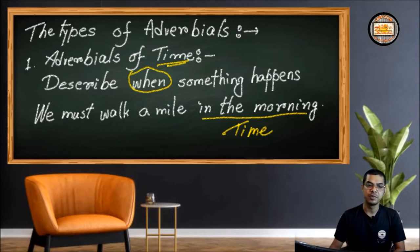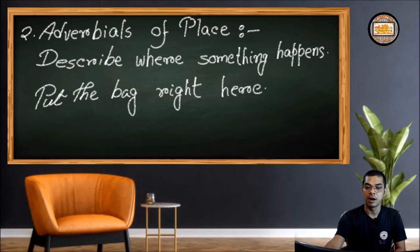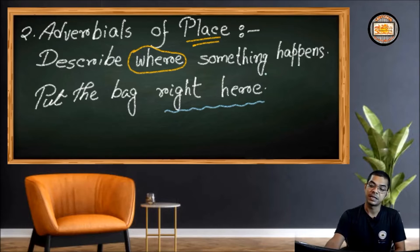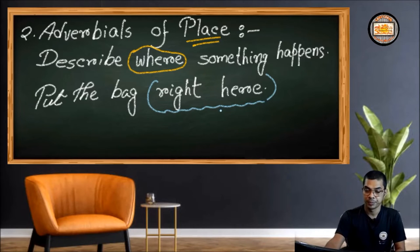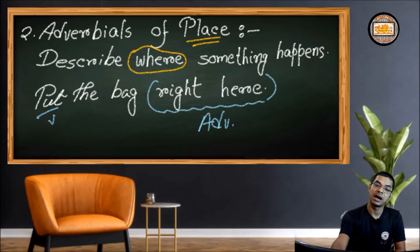That's why I've told you — if you learn adverbs properly, adverbials are very easy. The second type is adverbials of place. It describes where something happens. For example: 'Put the bag right here.' The phrase 'right here' speaks of where to put the bag. The verb is 'put' — but where? Right here. So this is used like adverbs of place, and that's why we consider it as adverbials of place. First learn adverbs properly and you would find adverbials easier.